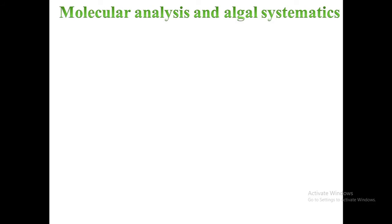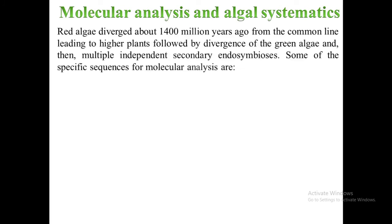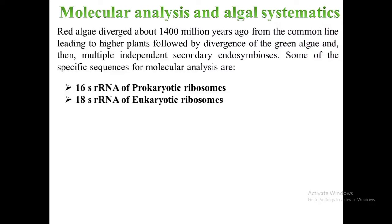According to Lee, data from molecular studies indicate that red algae diverged about 1,400 million years ago from the common line leading to higher plants. This was followed by divergence of green algae and then multiple independent secondary endosymbioses evolving algae with chloroplast endoplasmic reticulum membranes. Lee considered specific sequences of nucleotides in DNA and RNA — among them 16S rRNA from the prokaryotic ribosome and 18S rRNA from the eukaryotic ribosome are the main concern, as they are considered among the most conserved sequences. The 5S rRNA has also been used in phylogenetic studies by Lee.